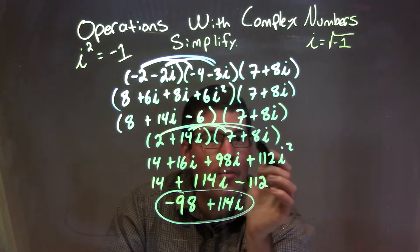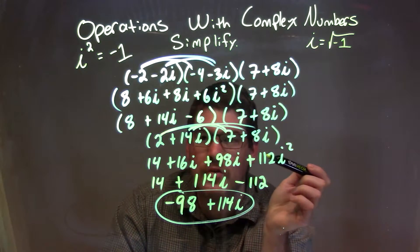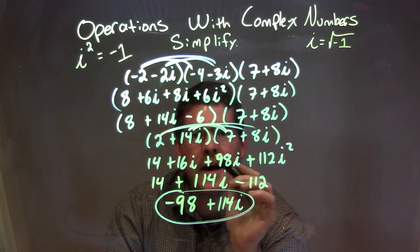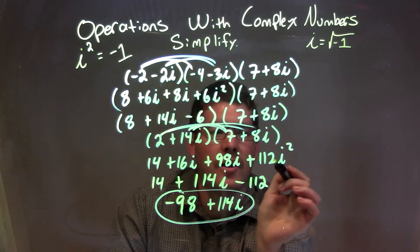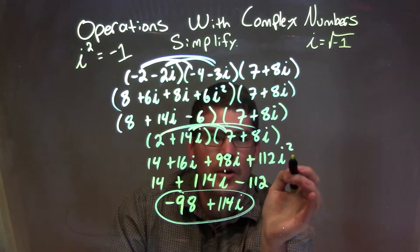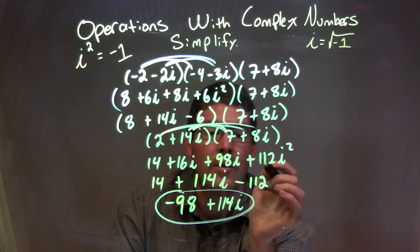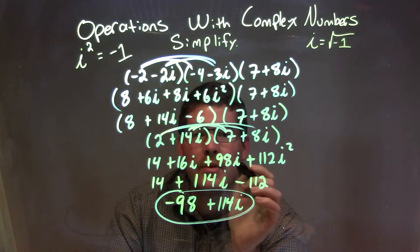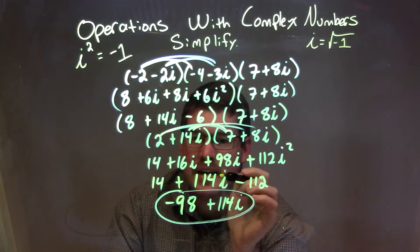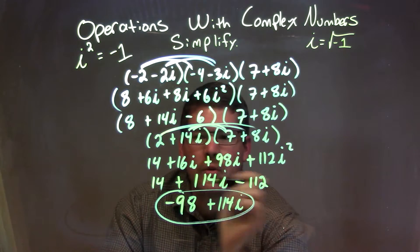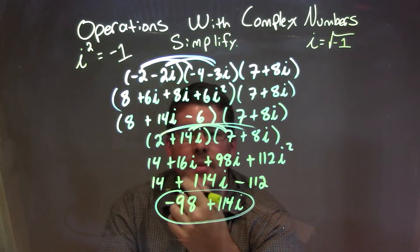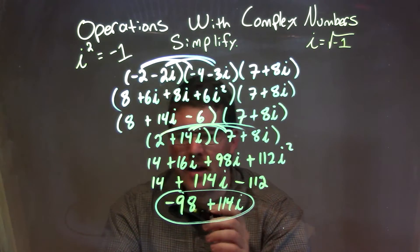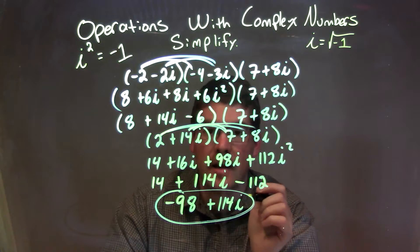I multiplied 2 plus 14i by the 7 plus 8i. When I multiply all parts out, I get 14 plus 16i plus 98i plus 112i squared. i squared becomes negative 1, so negative 1 times 112 is negative 112. 16i plus 98i is 114i. Negative 112 and 14 become negative 98, giving my final answer of negative 98 plus 114i.